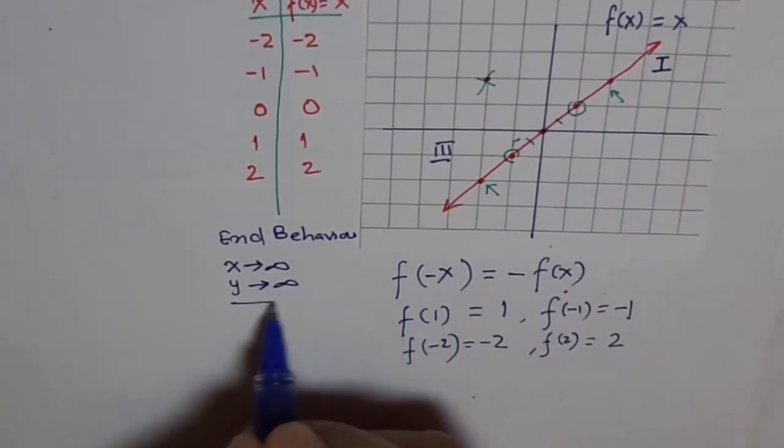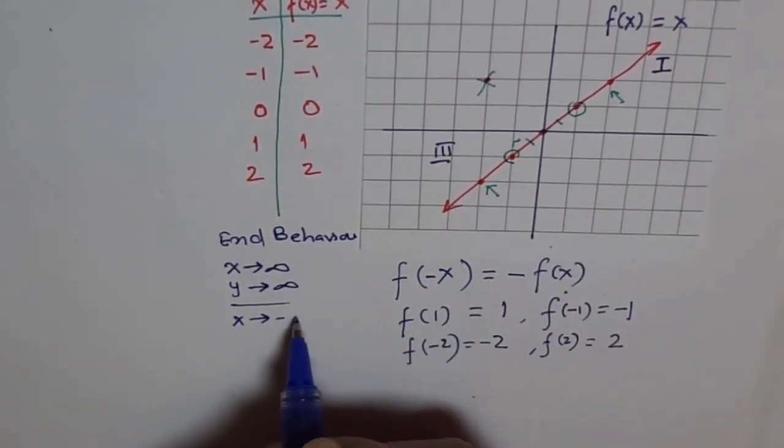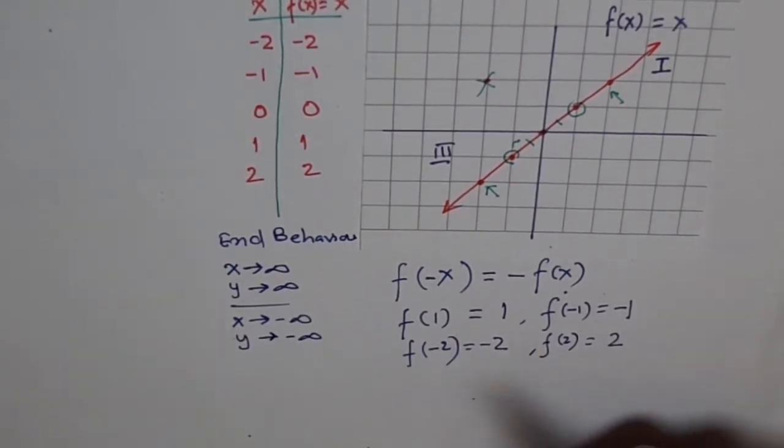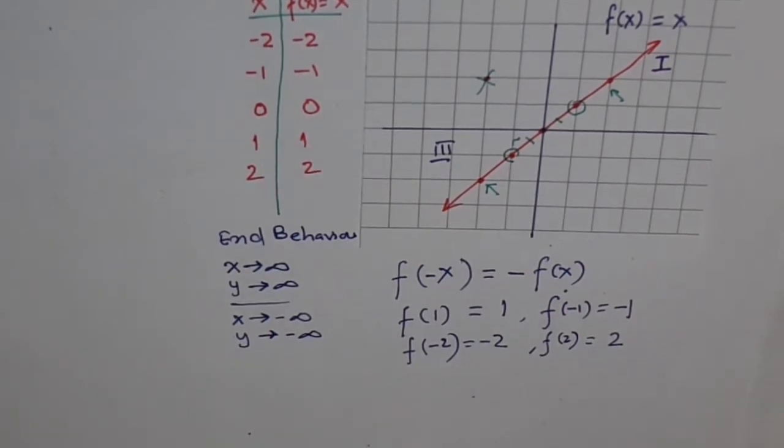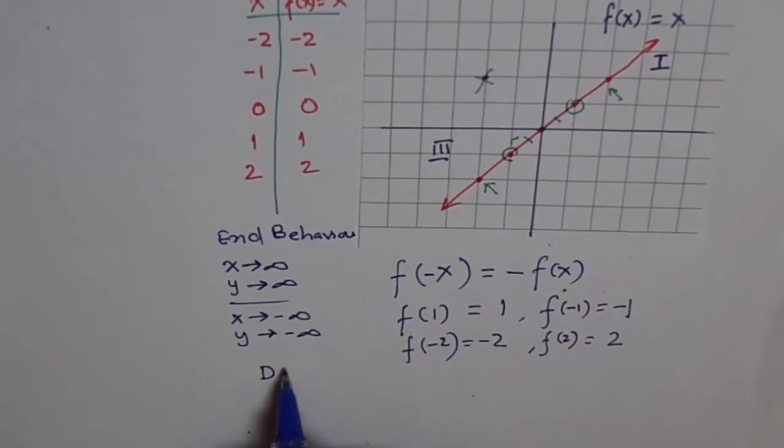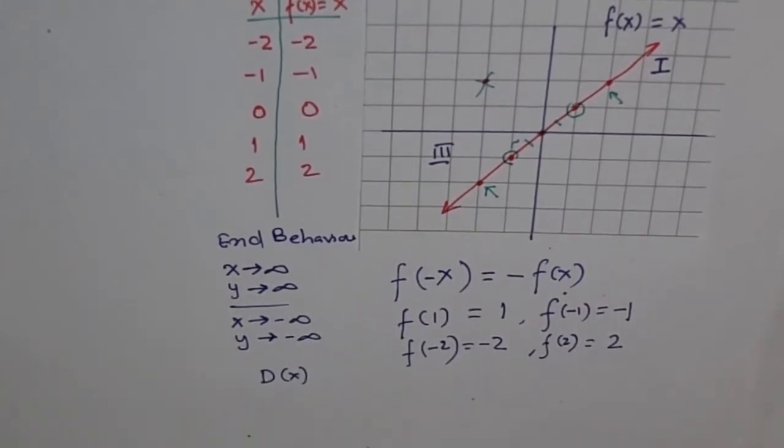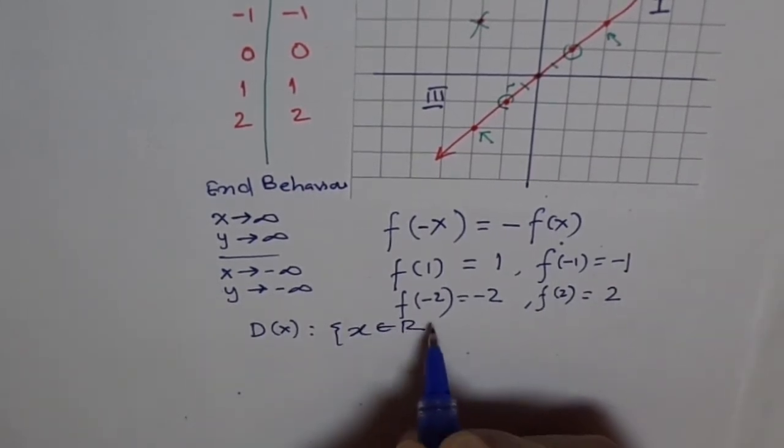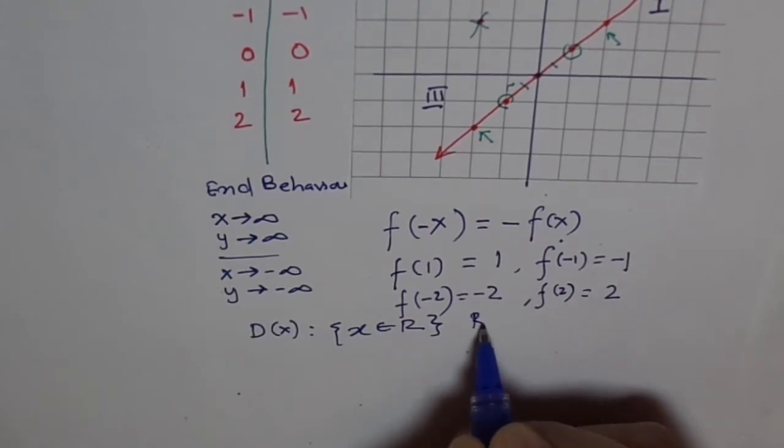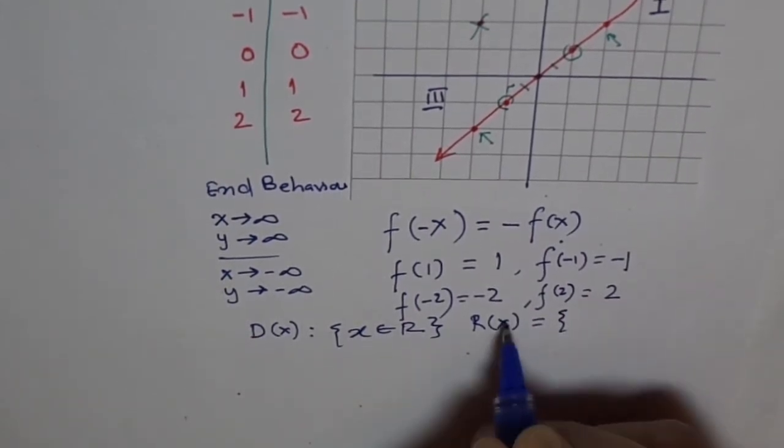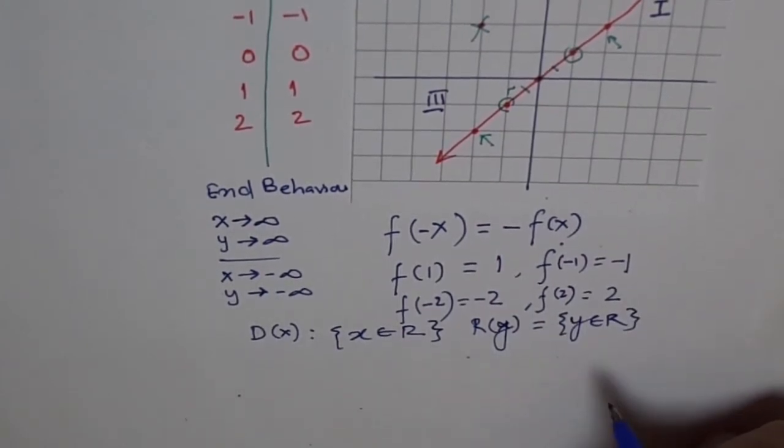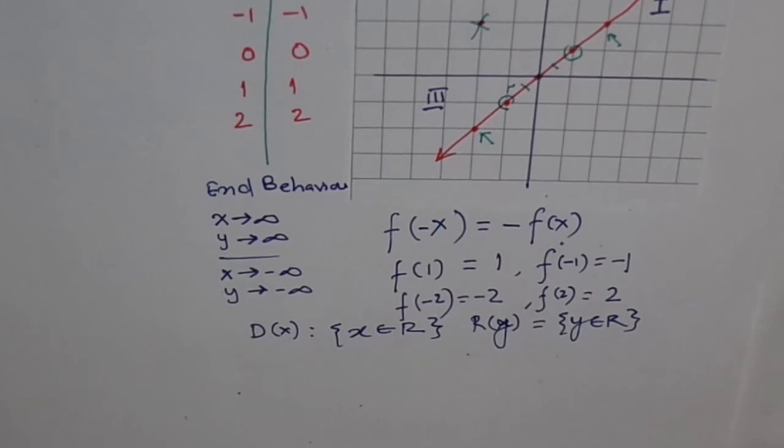And how about when x approaches minus infinity, what about y? Y approaches minus infinity. So therefore we see its domain and range is from minus infinity to plus infinity. So we can write domain of this function is x belongs to real numbers. And range is also, we should write y here, y belongs to real numbers. So the range is also all real numbers.